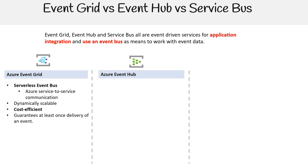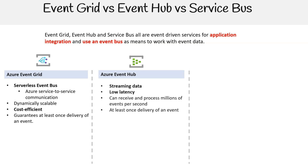Azure Event Hub is ideal for ingesting massive amounts of streaming data. It offers low-latency, processing events with minimal delay, and is high-throughput, capable of receiving and processing millions of events every second. It also guarantees at least once delivery of an event.